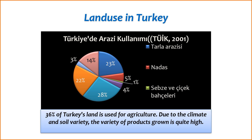8. Government support — Agricultural policies: the Turkish government plays a role in supporting agriculture through policies and subsidies. Programs aim to enhance soil fertility, improve agricultural practices, and ensure the sustainable use of land resources.